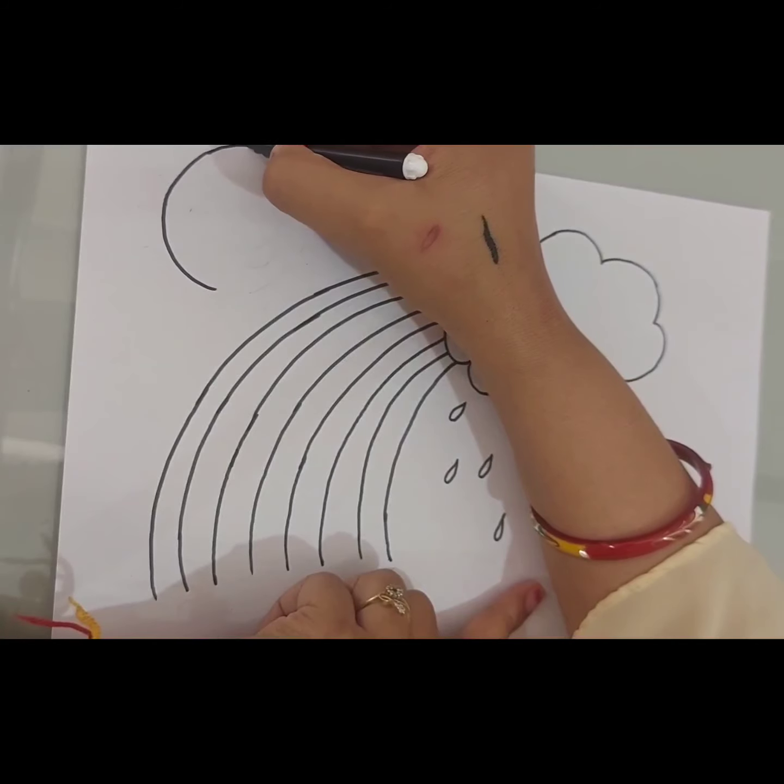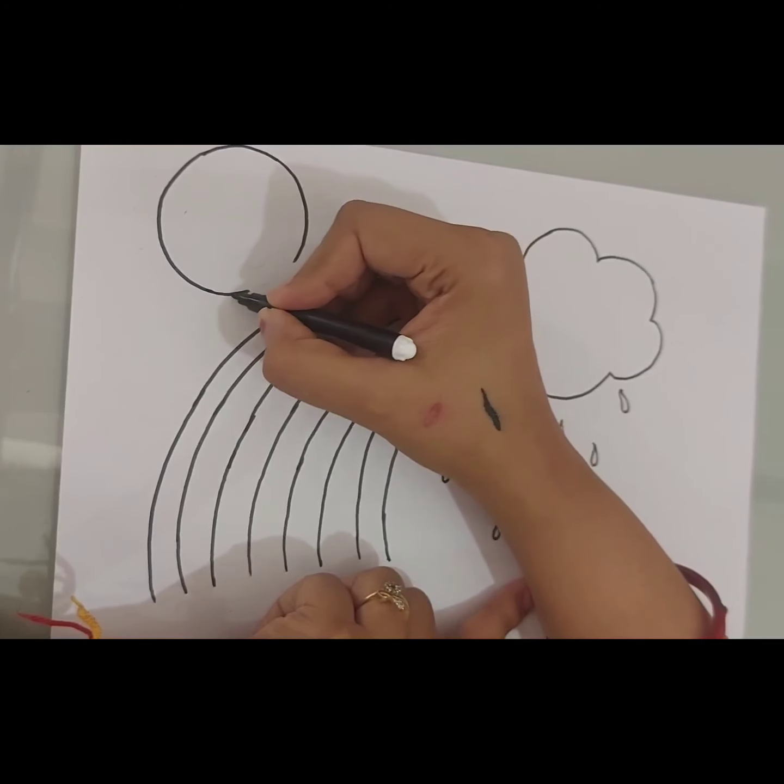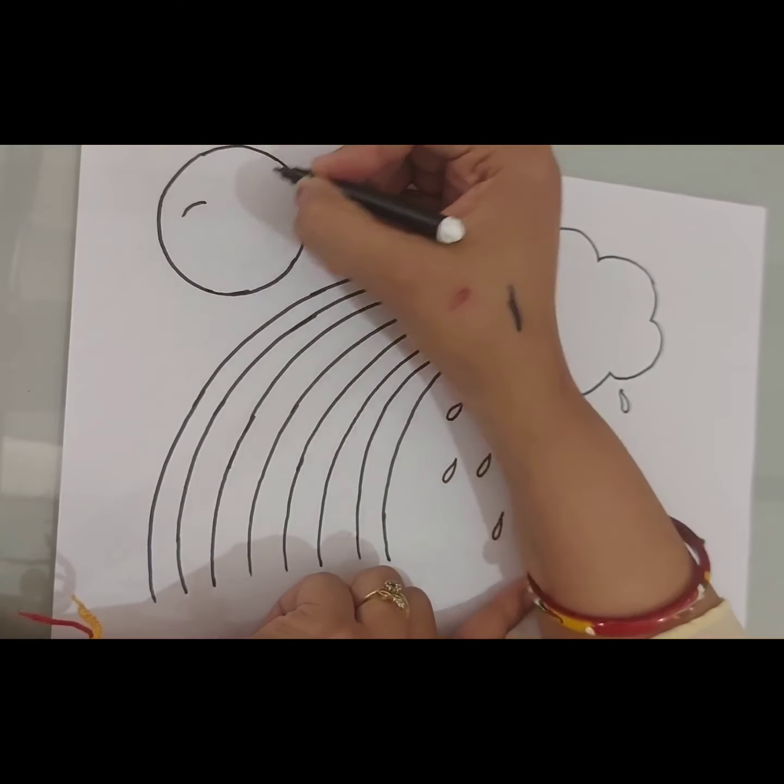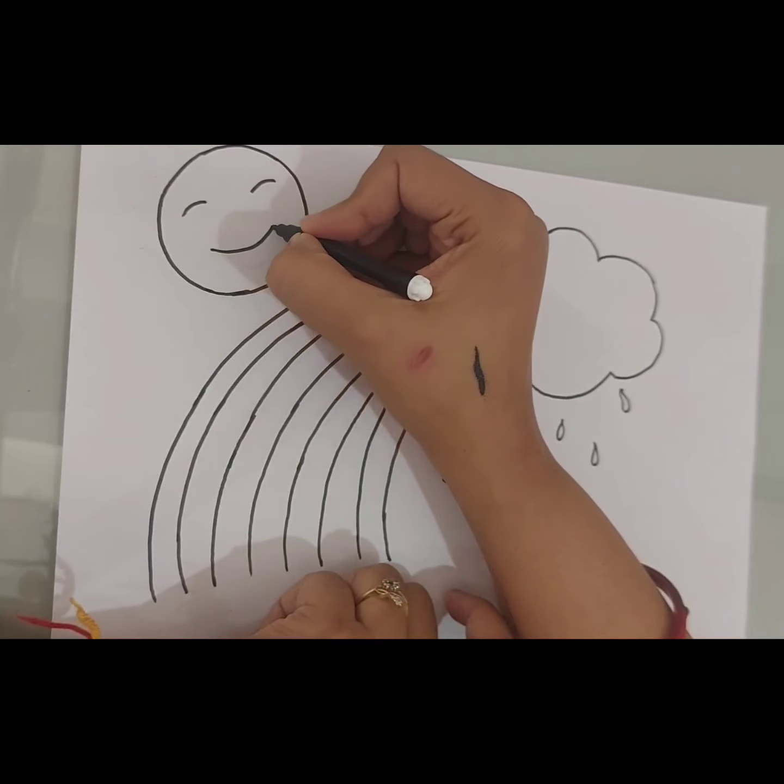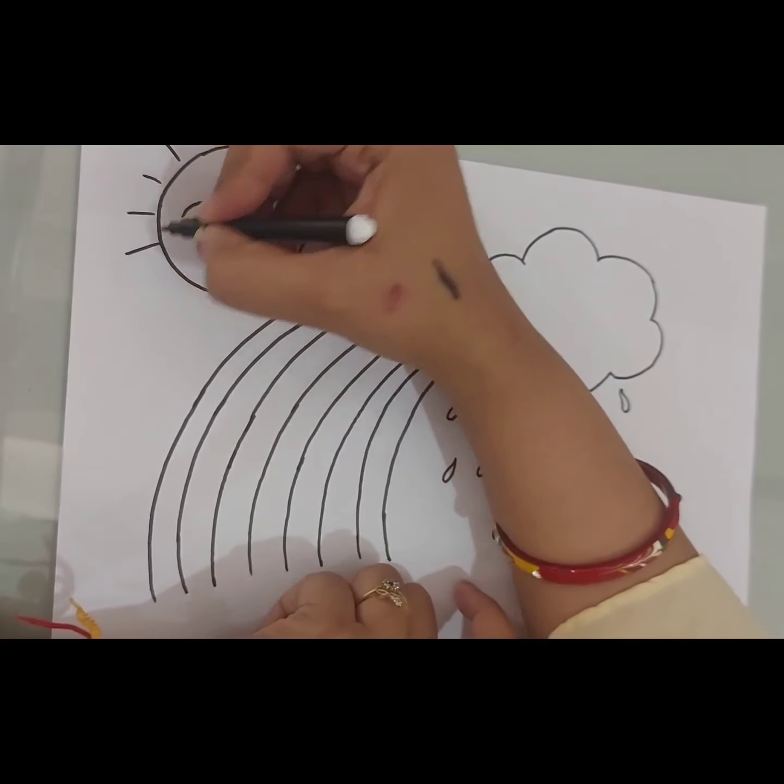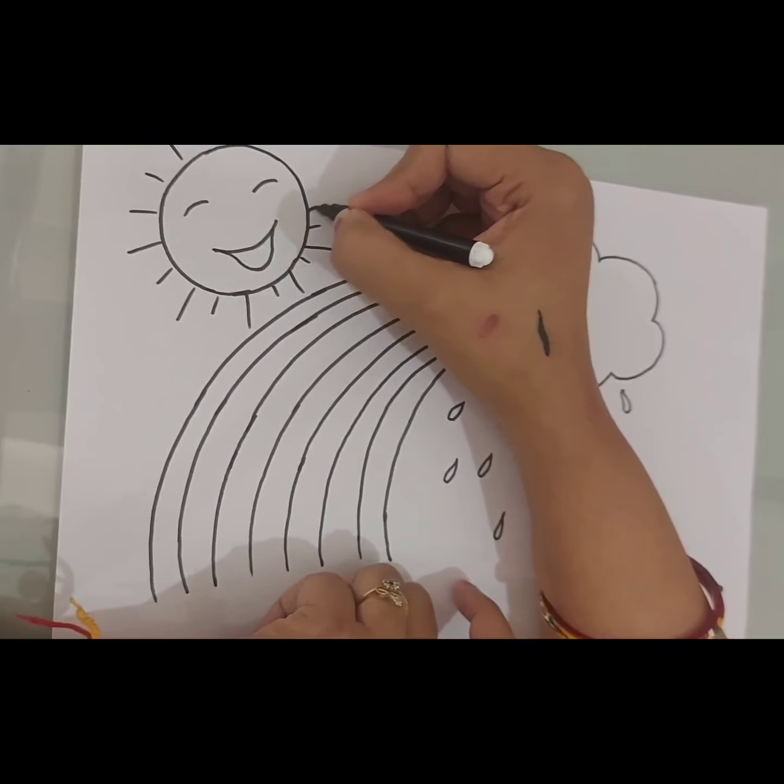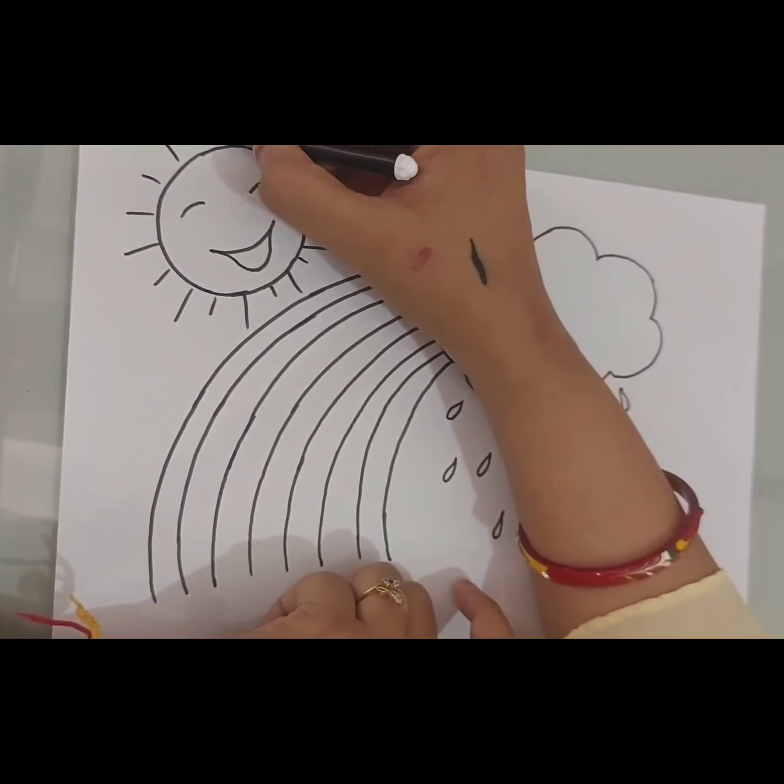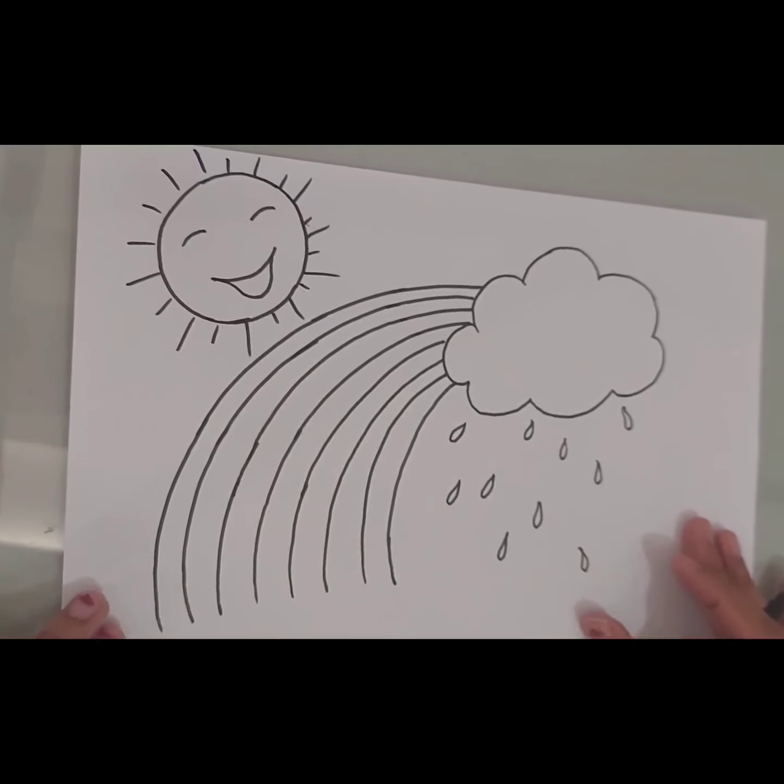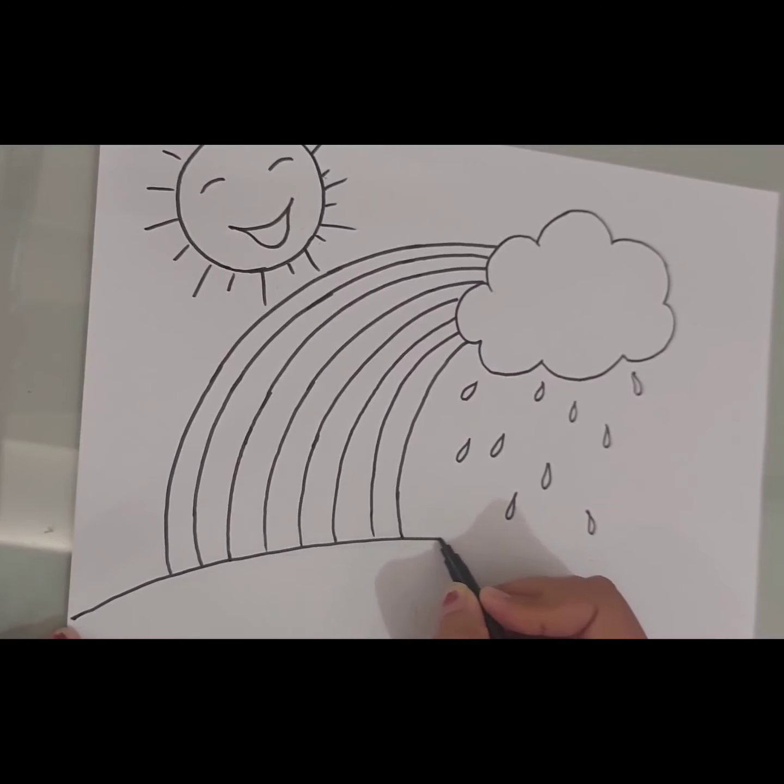Draw a circle. Okay, now draw the sun rays. Okay, so our sun is also complete. Now make some ground area to complete the drawing and it's done.